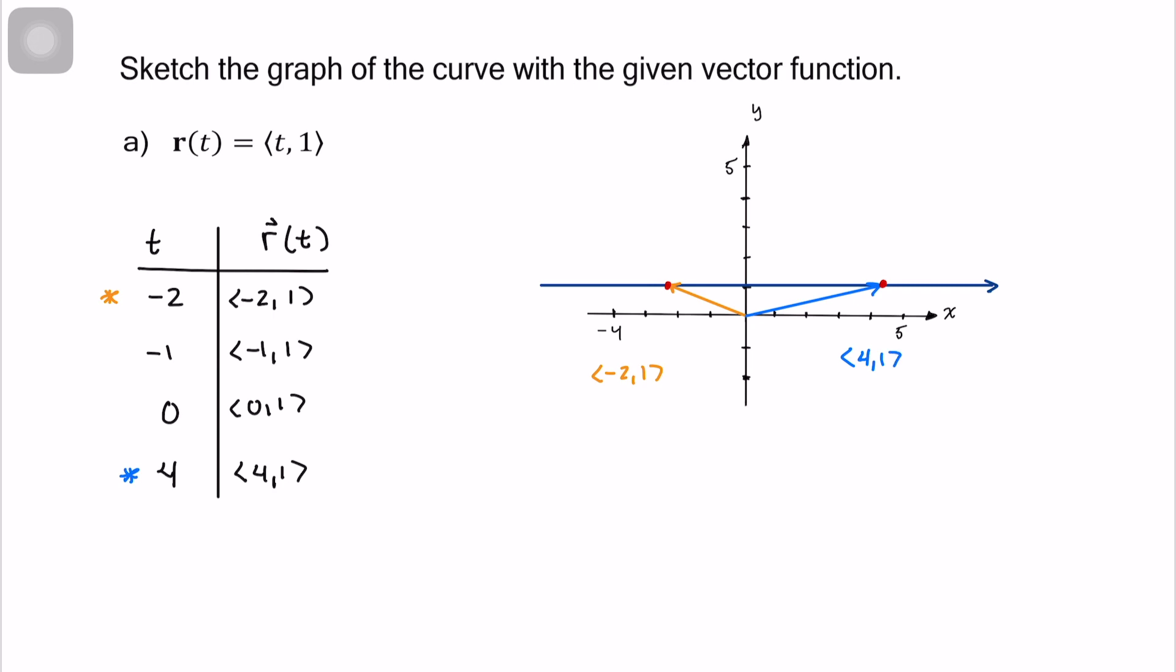So vector-valued functions are graphed by drawing all the vectors that make them up. So in this case, they'd look like this. And then we connect all the dots of the tips of these vectors to create the graph of the vector-valued function itself.